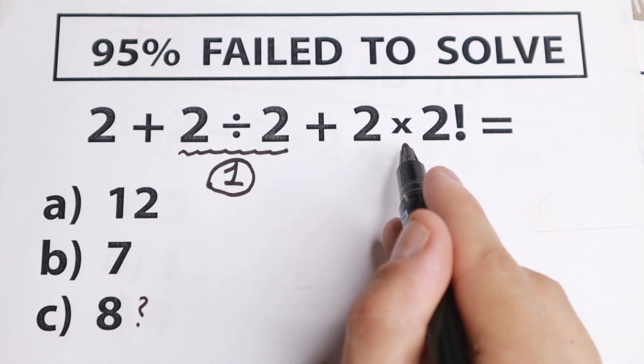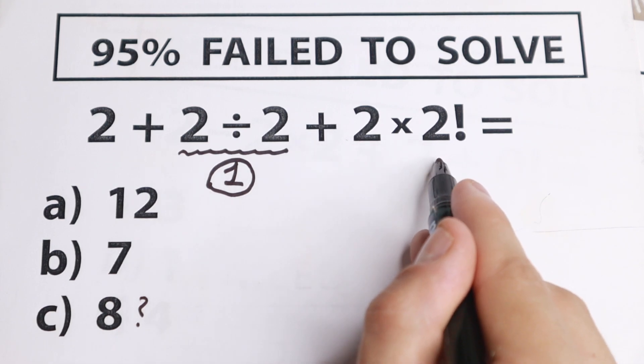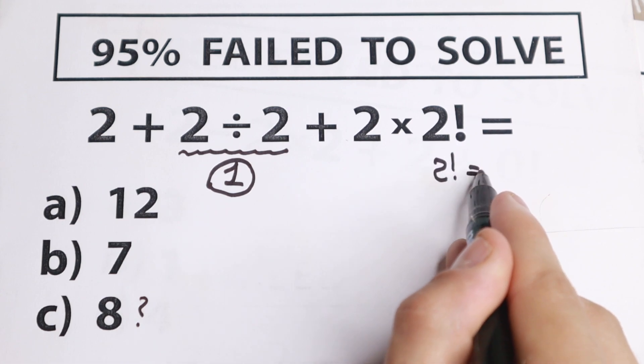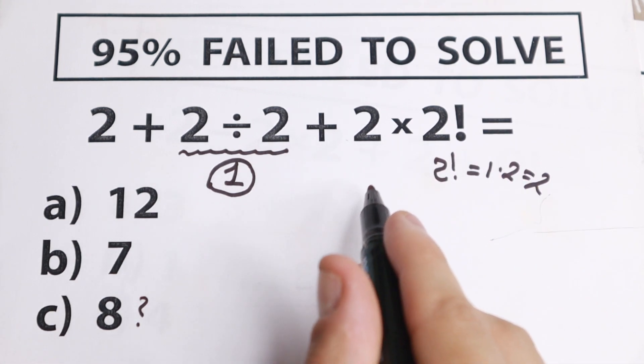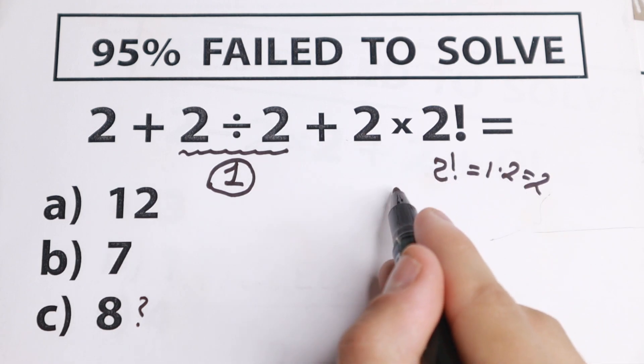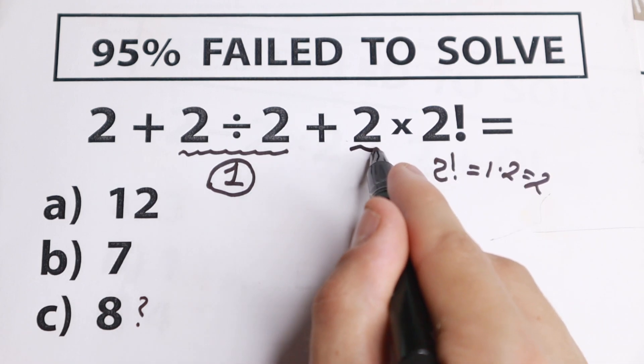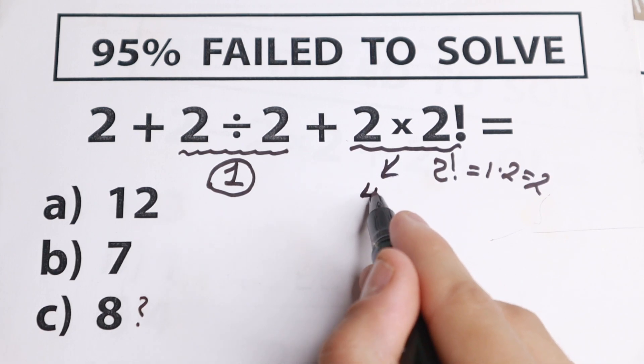And right here, we have 2 times 2 factorial. 2 factorial equal to 1 times 2 equal to 2. We know 2 factorial right here. And 2 times 2 equal to 4. So this product equal to 4.